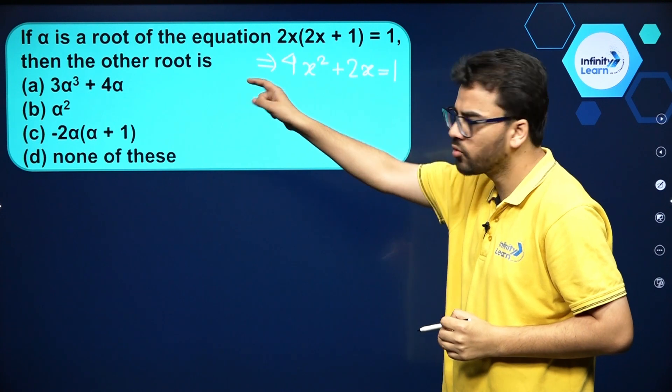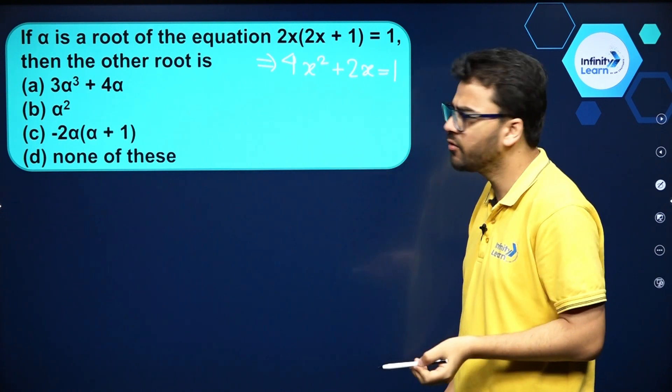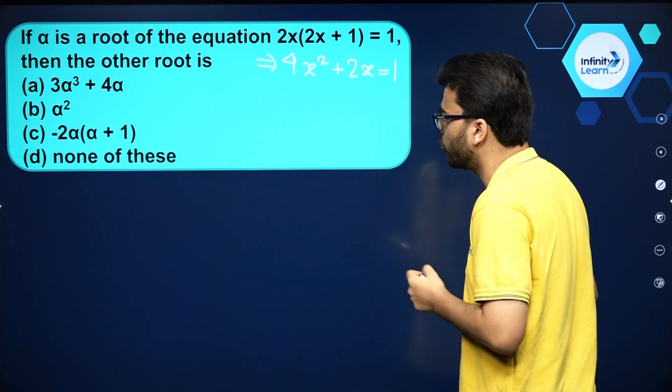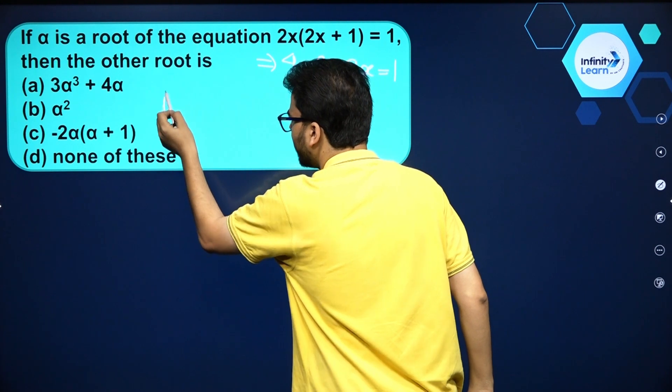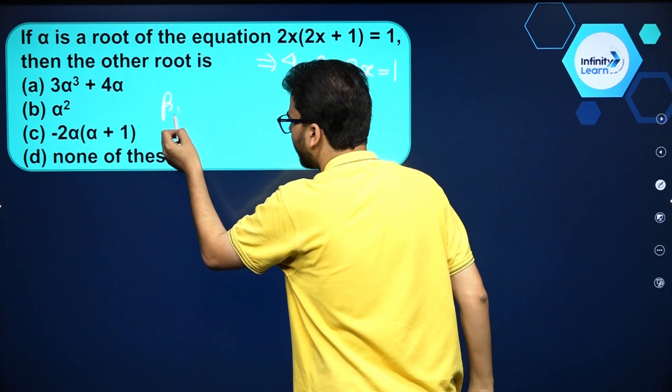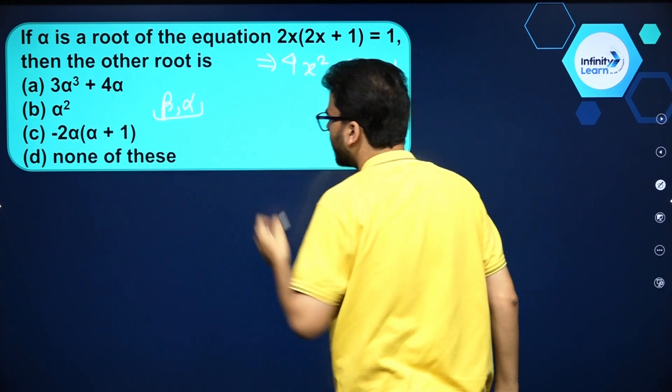Alpha is a root of this quadratic equation and we have to find the other root. Suppose the other root is beta and one root is alpha.